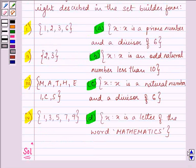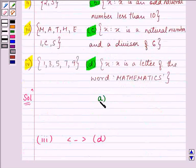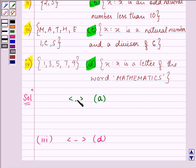Proceeding on next. Now, look at X is to X is a prime number and a divisor of 6. Which of these roaster forms matches this? 1, 2, 3, 6 - but we know that 1 and 6 are not prime numbers, so this is neglected. 2 and 3 - yes, this satisfies the condition. We can write our answer as that for A part, the answer is the second part.